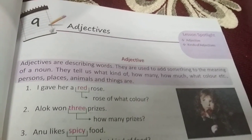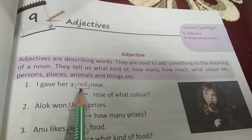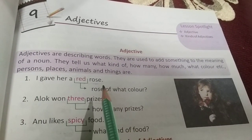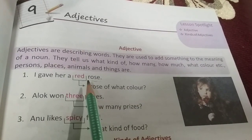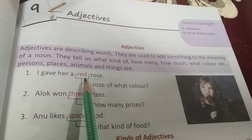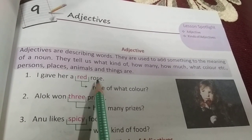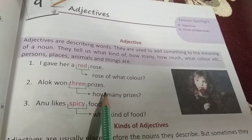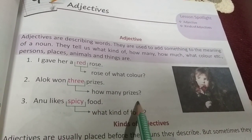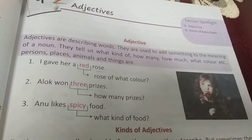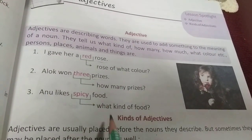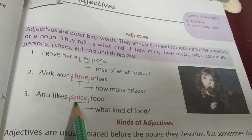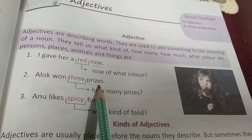For example, I gave her a red rose - so 'red' is the adjective and 'rose' is a noun. Red is describing the color of the rose. Alok won three prizes - 'three' describes the quantity of prizes. Anu likes spicy food - 'what kind of food' - Anu likes spicy food.